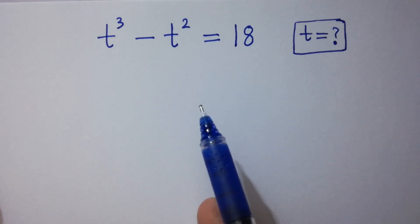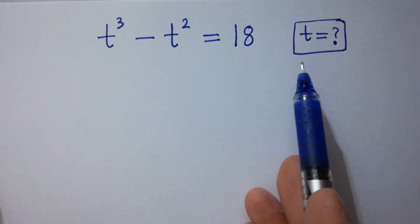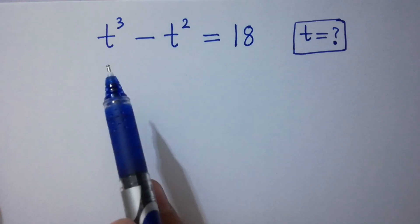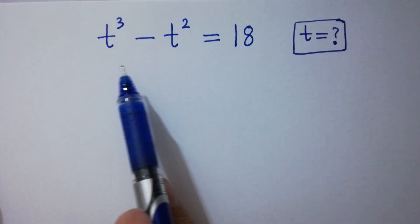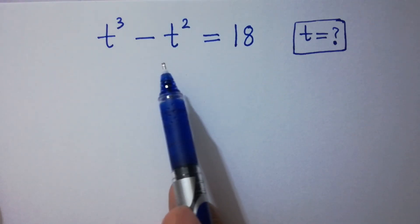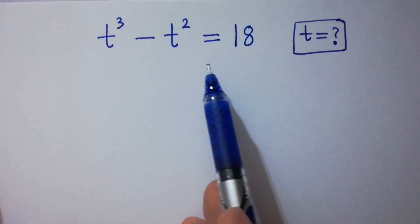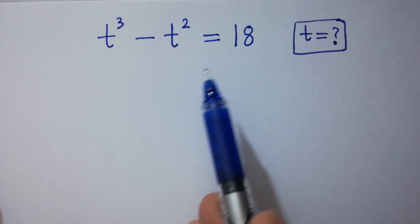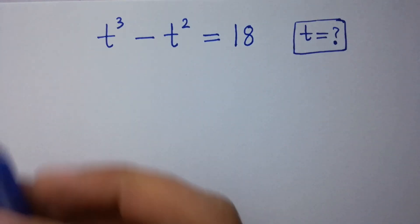Hello friends. Find the value of t if t cubed minus t squared equals 18. Let's have a solution.